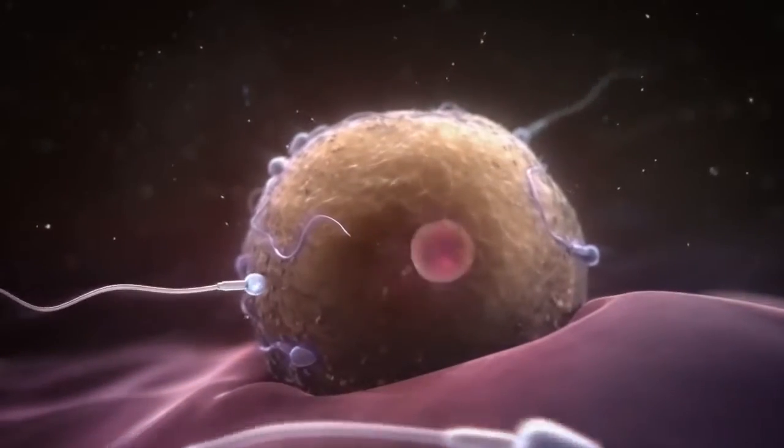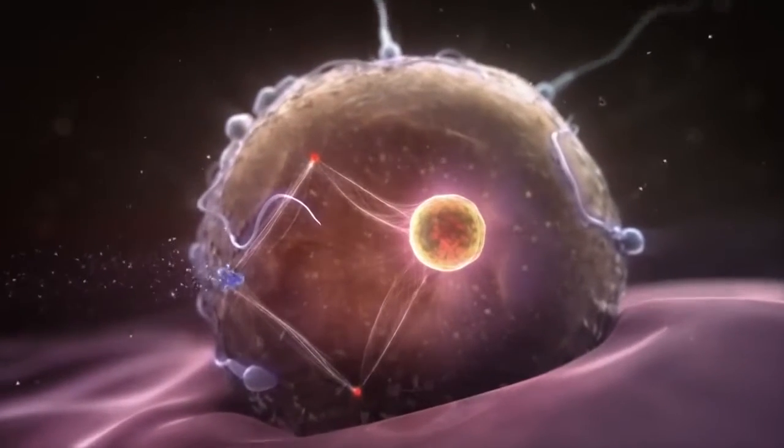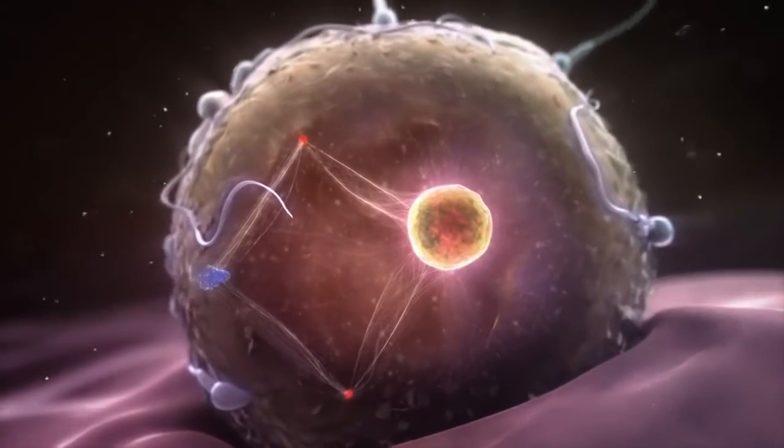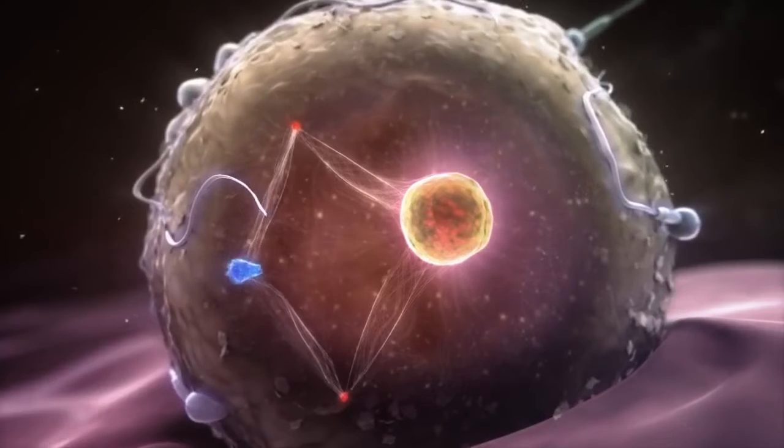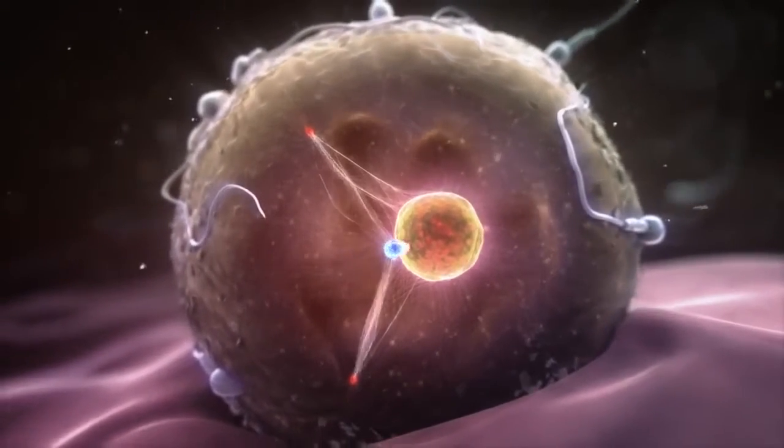As the sperm and the egg unite, the genetic materials of each are combined, providing the zygote with all the information necessary for transforming this single cell into the complex network of cells known as the human body.